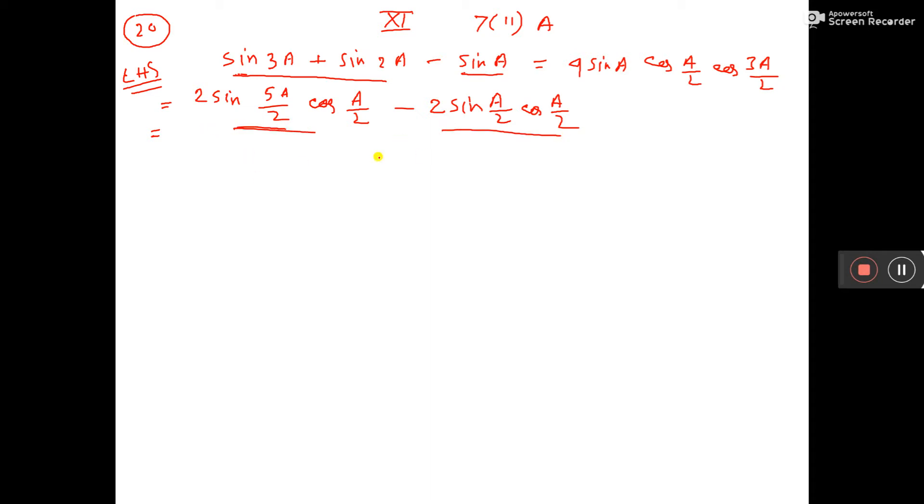Now, from these two, you take common cos a by 2. Then, what is left? Sin 5a by 2 minus sin a by 2.